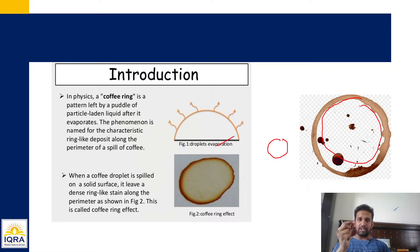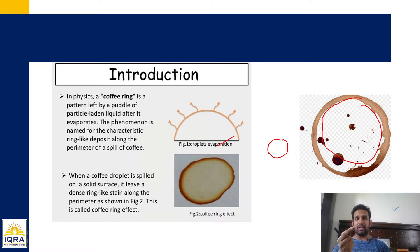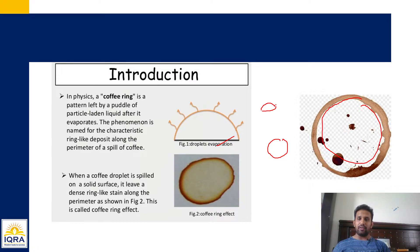Matlab kya hua: jo yeh paani ka drop tha — coffee toh paani hai — jab woh niche girta hai, toh beech ka hissa ka water pura evaporate ho jata hai. Aur jo bhi chhote chhote particles jo beech mein the, woh pura outward aa jate hain — as a bulb shape mein girne ke baad, particles outward move karte hain. Yeh outward movement ko we call it as outer edge effect, because outer edge pe ja rahe hain particles.